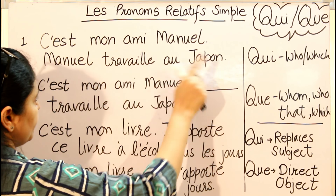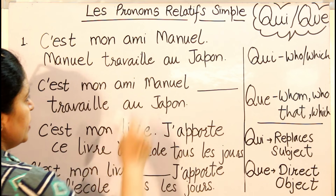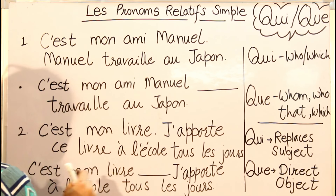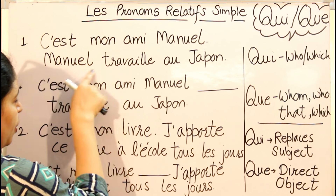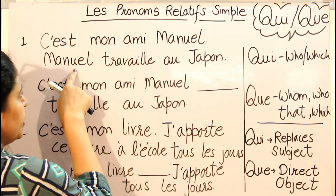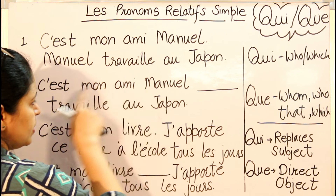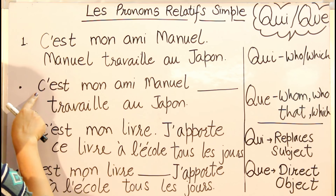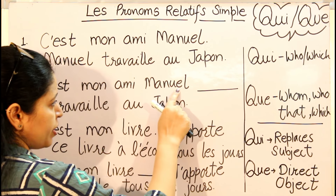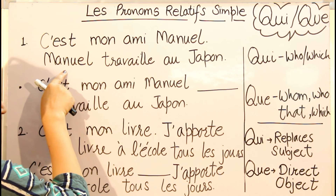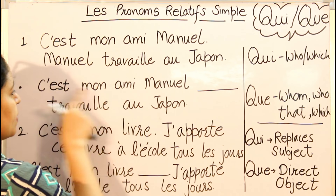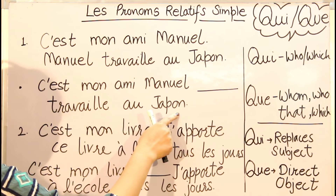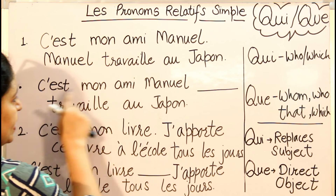Let's take the first example: 'C'est mon ami Manuel' — this is my friend Manuel. 'Manuel travaille au Japon' — Manuel works in Japan. I don't want to repeat Manuel again in my second statement, so I want to use a pronoun instead of this noun. I'll write: 'C'est mon ami Manuel [blank] travaille au Japon'.